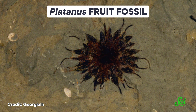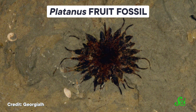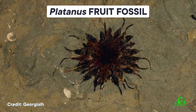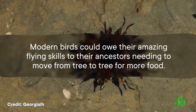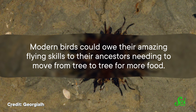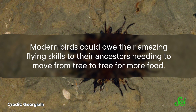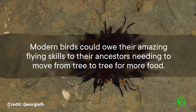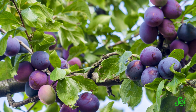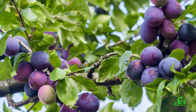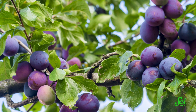Given that birds and fruit-bearing plants seem to appear in the fossil record around the same time, they may have helped each other evolve. Modern birds could owe their amazing flying skills to their ancestors needing to move from tree to tree for more food. And modern plants could owe their big, juicy fruits to their ancestors needing to make themselves as attractive to seed-spreading birds as possible. Dinosaurs and fruits — a friendship that lasts to this day.